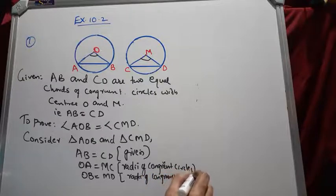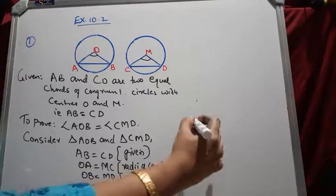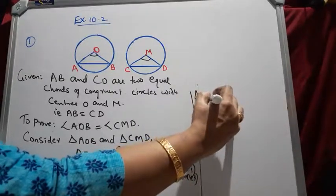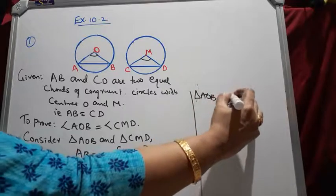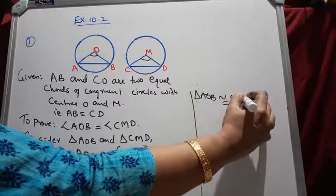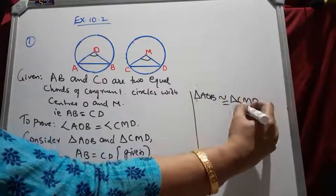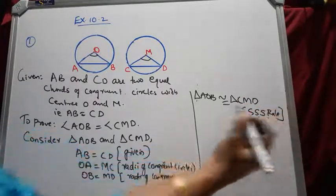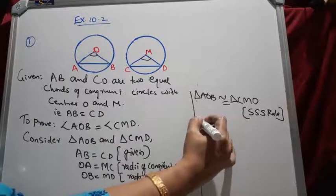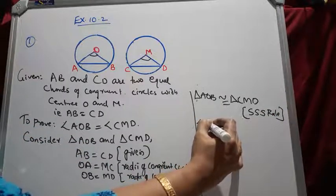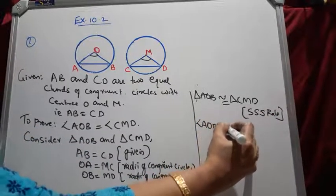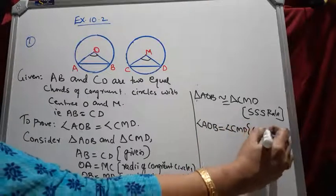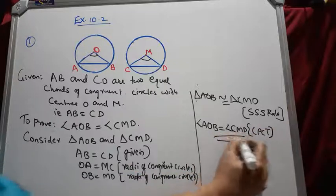By these three arguments we can conclude that triangle AOB is congruent to triangle CMD by the SSS rule. Therefore, angle AOB equals angle CMD by CPCT (Corresponding Parts of Congruent Triangles). This is what we wanted to prove.